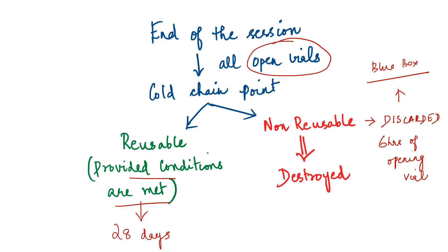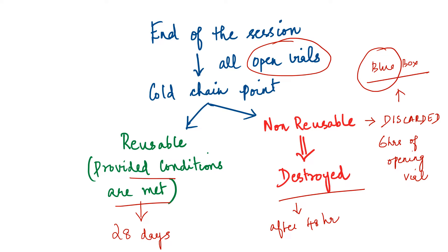According to biomedical waste management guidelines, non-reusable vials should be discarded in the blue cardboard box — because all glass wares, whether broken or discarded medicine vials and ampoules, should go into the blue cardboard box. Once discarded, they should be destroyed by microwaving or autoclaving and then sent for recycling, after 48 hours or before the next session begins.